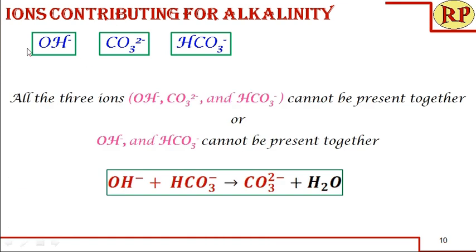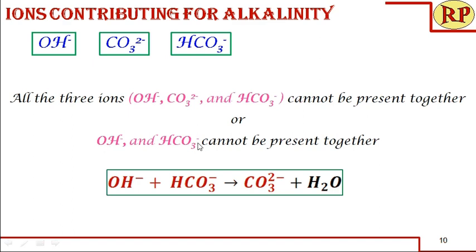These are the three ions contributing to alkalinity. All three ions will not be present together in the water — hydroxide and bicarbonate cannot be present together because they combine to form carbonate. So if both are present, we will have carbonate instead of those two. For this reason, we will not have all three present together, nor hydroxide and bicarbonate simultaneously. There are five possible conditions depending on the P and M values.